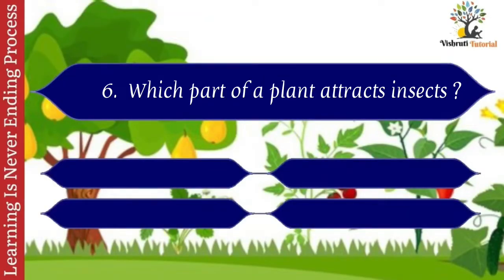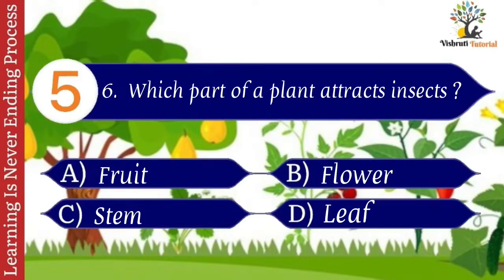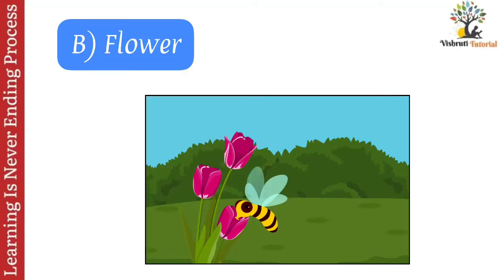Question number six: which part of a plant attracts insects? Options: A. Fruit, B. Flower, C. Stem, D. Leaf. The correct answer is B. Flower. Flower is a part of a plant that attracts insects.